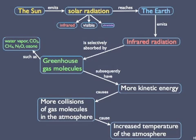Now, let's use a flowchart-like concept map. If this is too busy for you, don't worry about it. It's the same stuff as in the simpler list on the preceding slide. The sun emits solar radiation, chiefly infrared and visible light, with a little UV. The radiation reaches and energizes Earth, which then radiates infrared radiation of its own. This infrared is selectively absorbed by greenhouse gas, such as water vapor, carbon dioxide, and methane, which subsequently have more kinetic energy, which causes more collisions of gas molecules, which causes an increase in the temperature of the atmosphere.